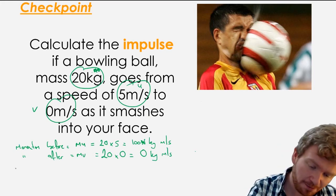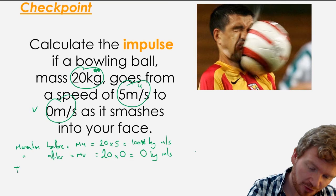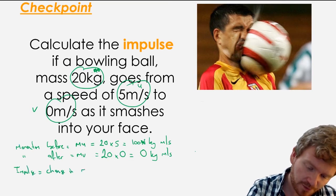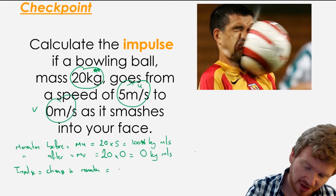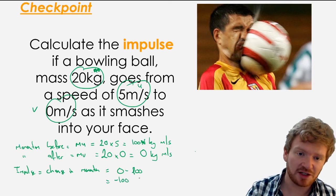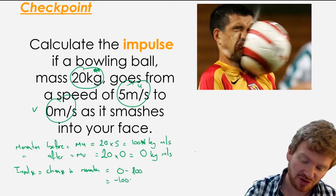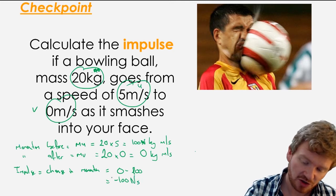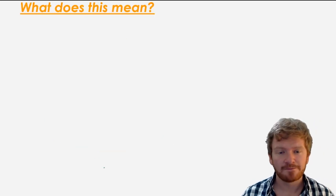Now, impulse we know is change in momentum. Quite simply, it will be MV minus MU. So it'll be 0 take away 100. So it'll be minus 100. And I could give it in kilogram meters per second squared, but remember what I said earlier, we generally give it with the units newton seconds.